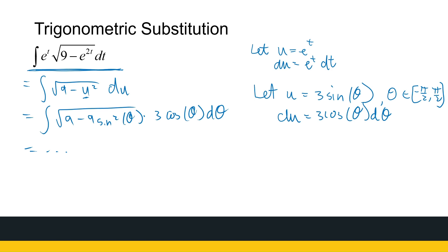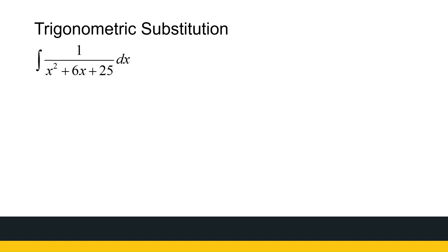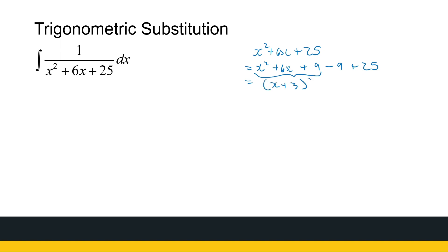You can complete this one on your own time. Now the next one really doesn't look like a trig substitution. We've got a fraction, and in the denominator I've got something I can't factorize. What you need to notice is x squared plus 6x plus 25. If I complete the square, that's the same as x squared plus 6x plus 9 minus 9 plus 25. Grouping these terms together — this technique is called completing the square — that is x plus 3 squared plus 16.